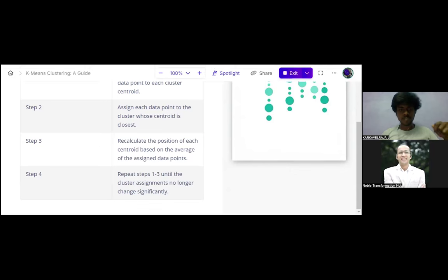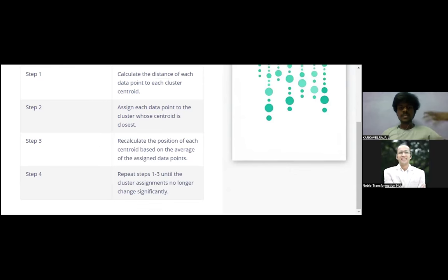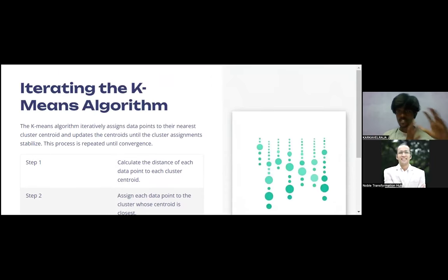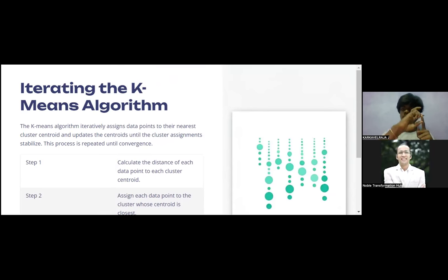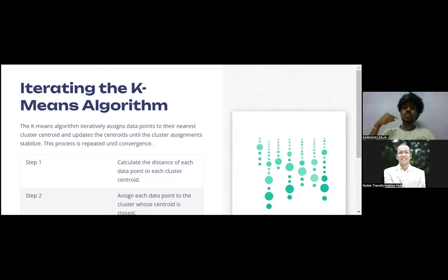Step four: repeat steps one through three until the cluster assignment no longer changes significantly — that is convergence. First we fix the number of centroids, assign data points to the closest centroid, recalculate the centroid position, find optimal data points, and keep repeating this until we get convergence.